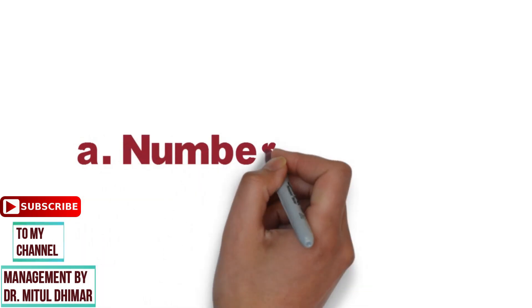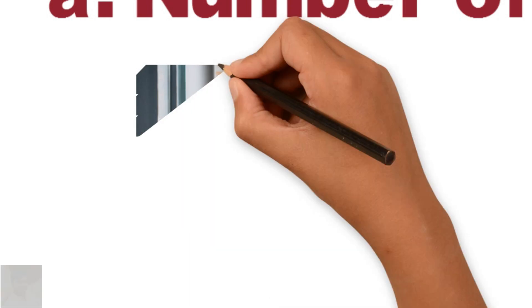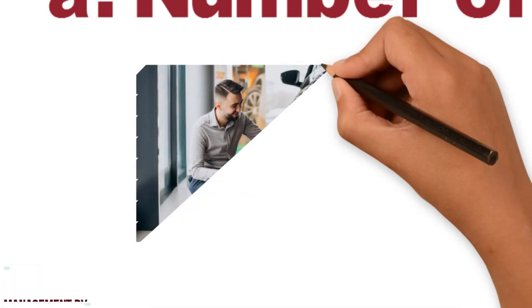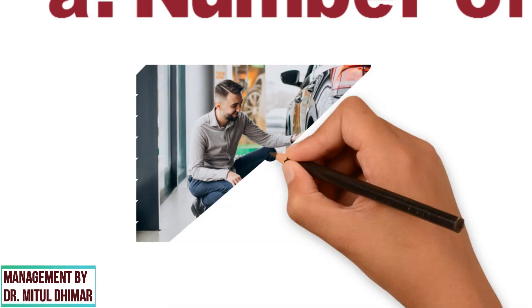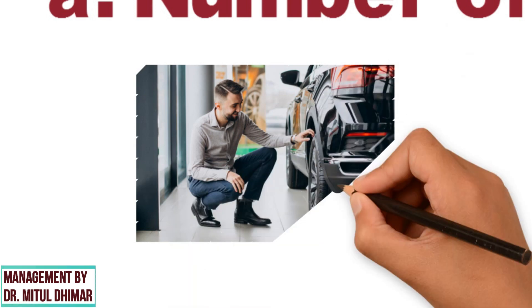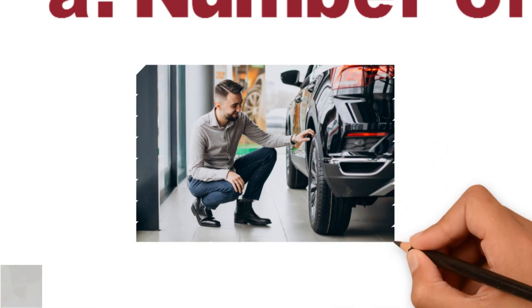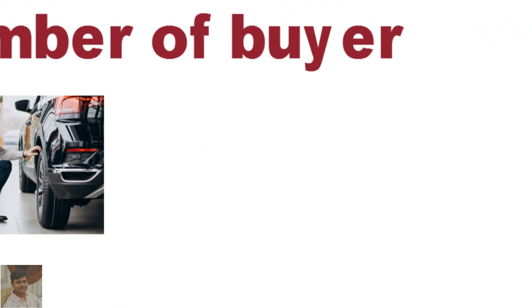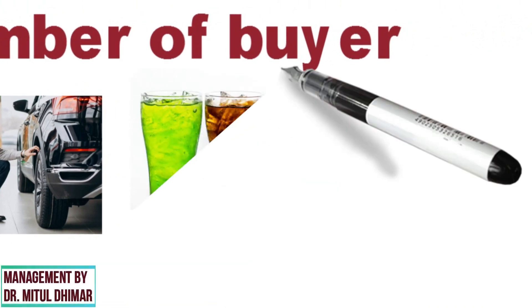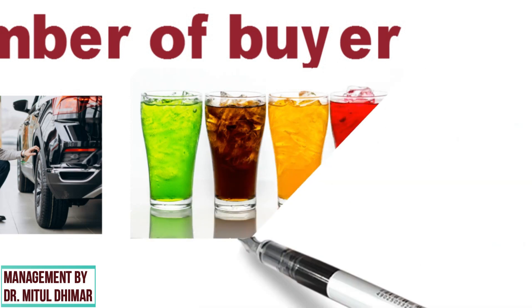First factor is number of buyers. If the goods market is small, the manufacturer himself can sell his goods. For example, Big Boy Toys are the car showroom in which luxury, exotic, and imported luxury cars are available for sale in India. If the number of buyers are more, then more numbers of intermediaries are required.